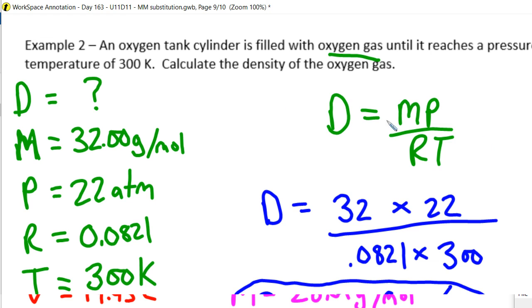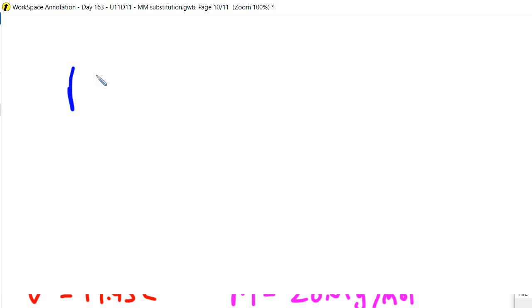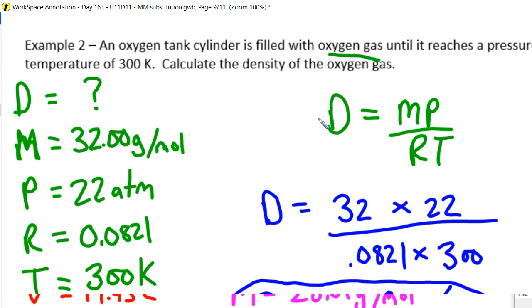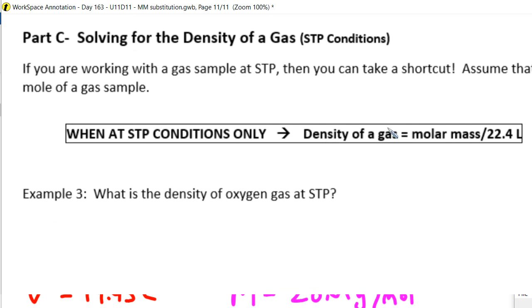So the density will be 28.6 grams per liter. Alright, so that's how you can use that new density equation. Now, the thing is, don't overthink some of these problems. Density is also equal to mass over volume. So if you know the mass of your gas, and you know the volume of the gas, then just use this equation. Only use this equation, like if you don't know the volume, or you don't know the mass, you can use this one.